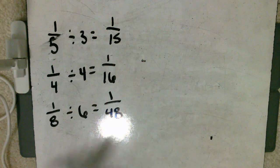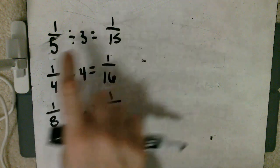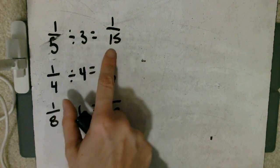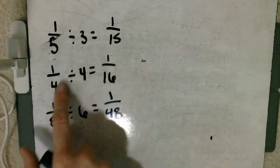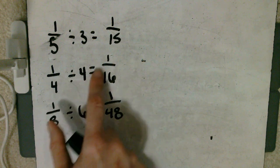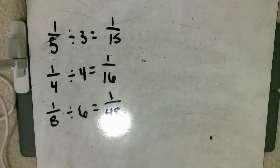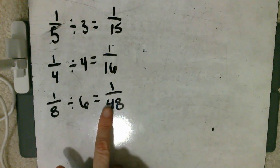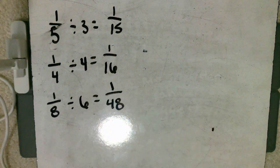Check your answers and read these final equations with me with the correct answer. One fifth divided by three equals one fifteenth. One fourth divided by four equals one sixteenth. One eighth divided by six equals one forty-eighth. Nice job, mathematicians. If you got any of those or even gave them your best shot, give yourself a high five or pat on the back. I'm proud of you.